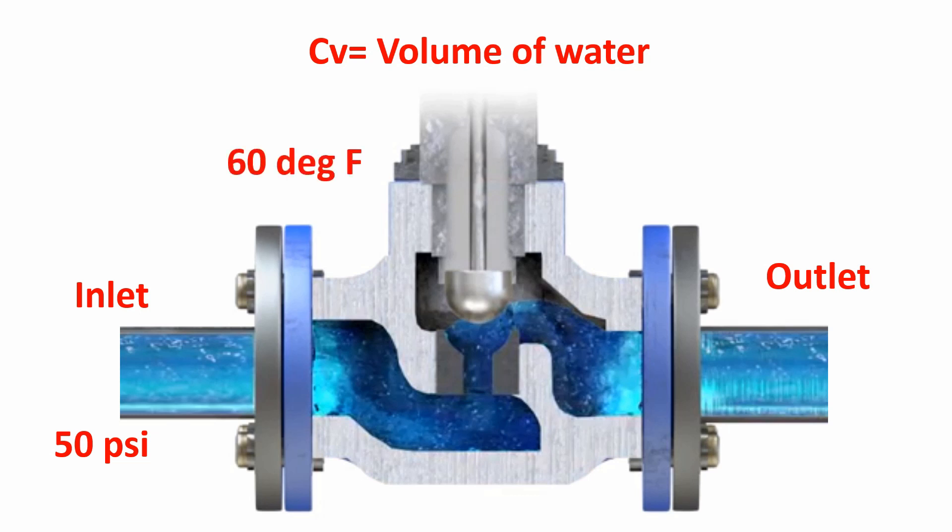At 60 degree Fahrenheit. This is very important. And the next mandatory thing is this process fluid is going to pass through the control valve within one minute and creating a differential pressure of one PSID only.